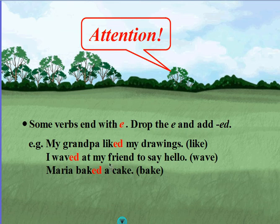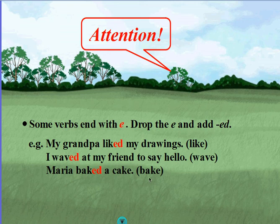I waved at my friend to say hello. The base verb is wave and it ends with a silent e, so we drop the silent e and add -ed to show that the action happened in the past. Maria baked a cake. The base verb is bake and it ends with a silent e, so we drop the silent e and add -ed to show that the action happened in the past.